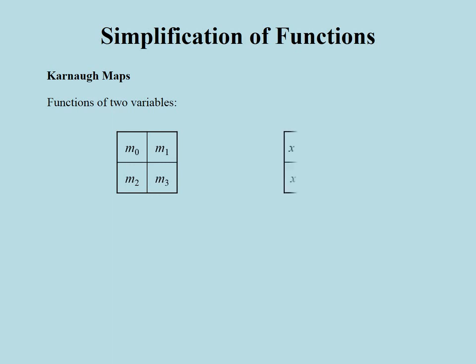Let us write these min terms explicitly so that we can locate the different literals of two variables, say x and y, in the map. We can enumerate the rows for x and columns for y in this two-by-two map as 0 and 1. Any min term number, which can be between 0 and 3, can be directly obtained by simply combining the digit in its row with the digit in its column. Note that all min terms with unprimed x literal are in the second row, and those with x prime are in the first row. Similarly, the first and second columns contain the primed and unprimed literals of y, respectively.